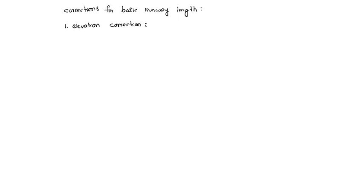The correction here is 7% for every 300 meters of elevation above MSL — above mean sea level. That is the elevation correction.